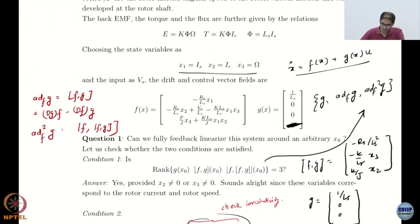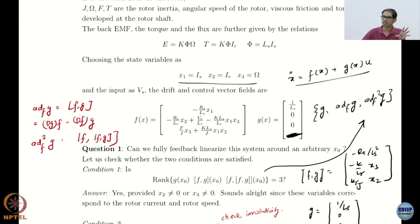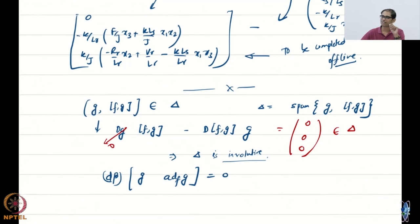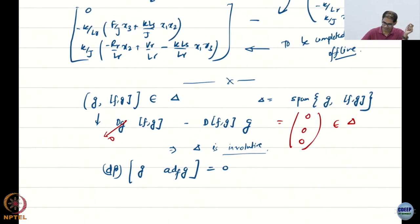For this DC motor example, we are simply verifying that we have the conditions that are needed. We need g, adf g, and adf square g to be linearly independent, which turned out to be a little bit complicated. I will really ask you to try to verify this numerically. And then the second condition that we needed to verify was that the distribution formed out of g and adf g is in fact involutive.